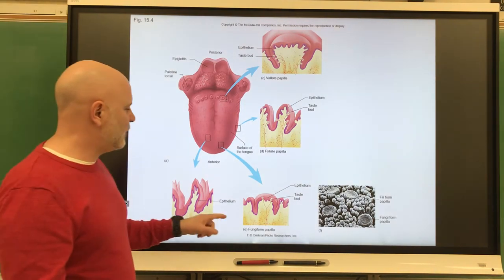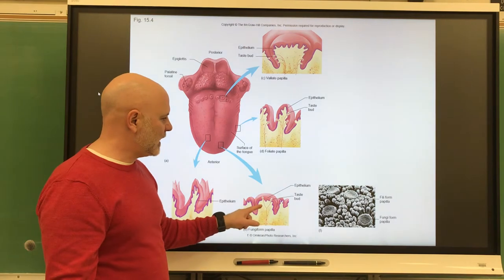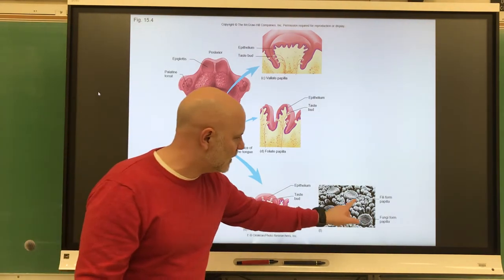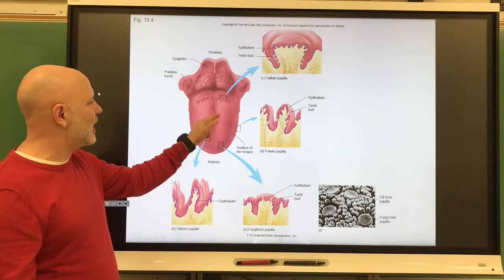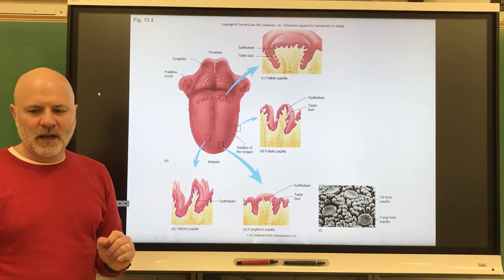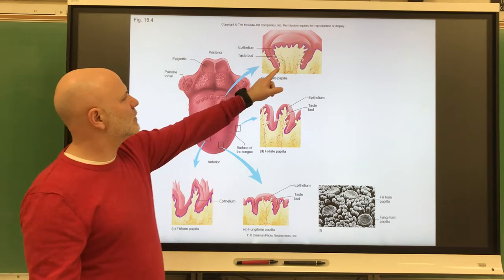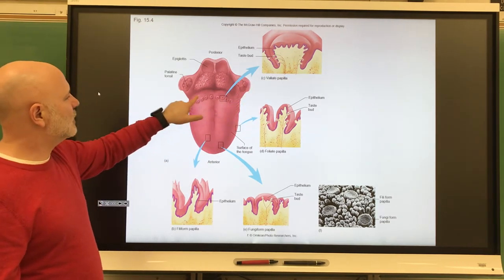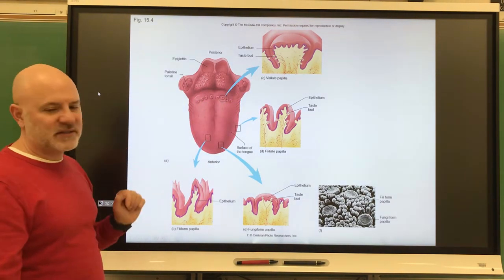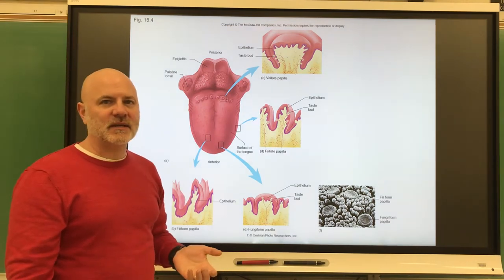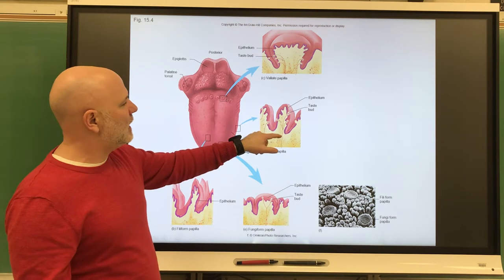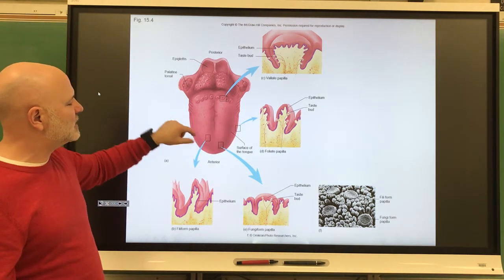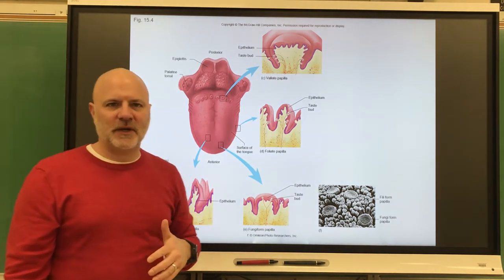Next are fungiform papilla. So these guys right here are fungiform. These guys do have taste buds and these are scattered throughout the tongue. Next are circumvallate or just valent papillae. These are found in a row in the back of the tongue. They also contain taste buds. Next are foliate. These are showing foliate here. Foliate are found on the sides of our tongue. They also contain taste buds.